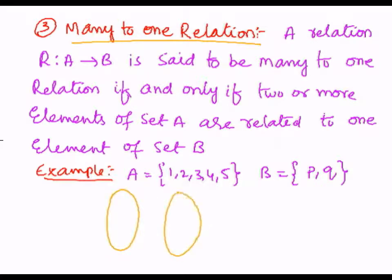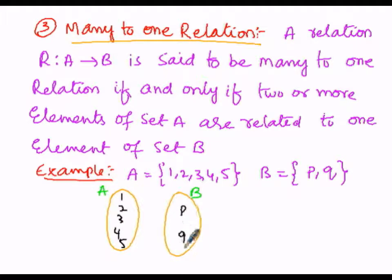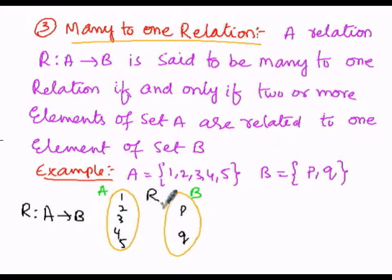Set A elements are 1, 2, 3, 4, 5 and set B elements are only 2: P and Q. The relation R is from A into B. As per the condition of many-to-one, two or more elements of set A must have a relationship with one and only one element of set B.